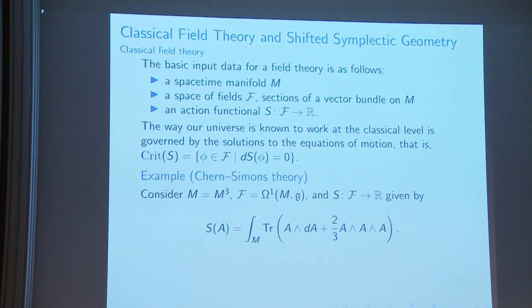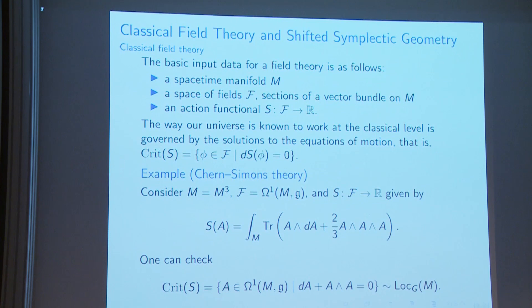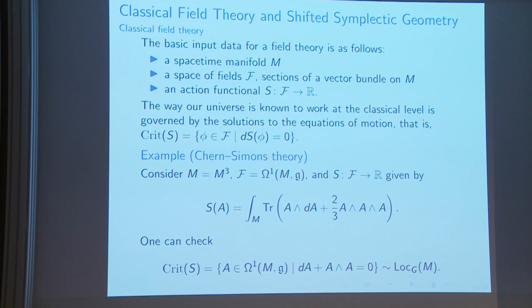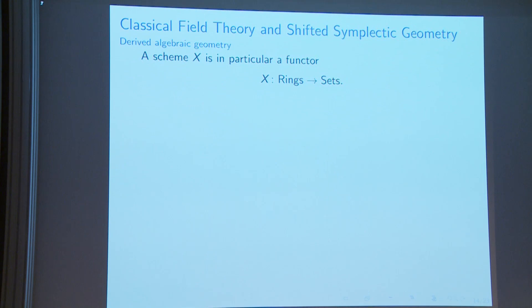An example is Chern-Simons theory: on a 3-manifold, the fields are one-forms with values in a Lie algebra, and the action function is given in the usual way. You can check that the critical locus cuts out the flat connections.